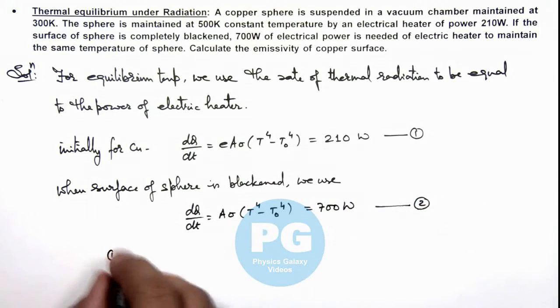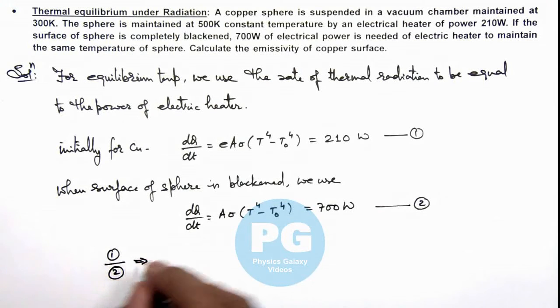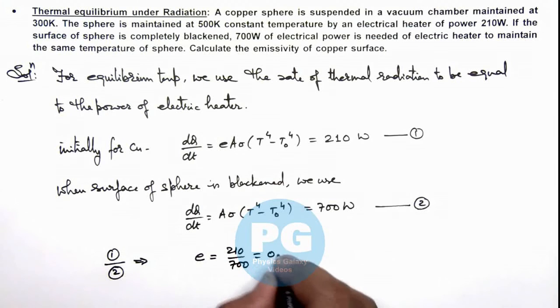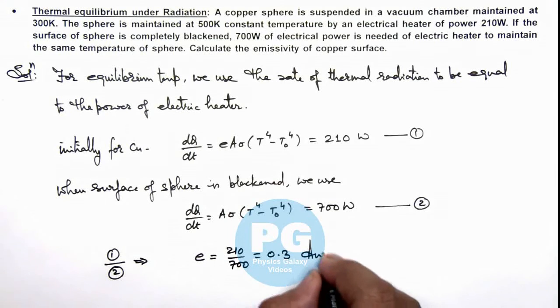Now if we divide equation 1 by 2, this will directly result as the value of emissivity which is 210 divided by 700. So this is equal to 0.3, which is the result of this problem.